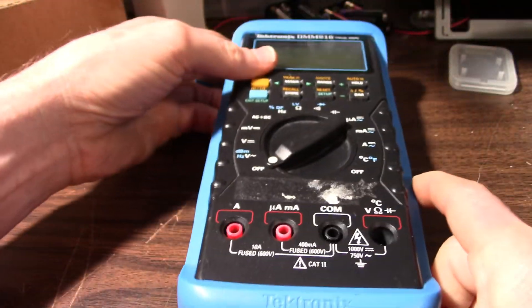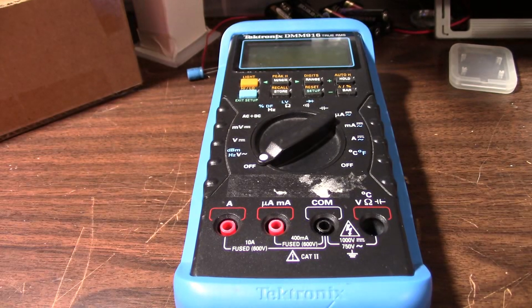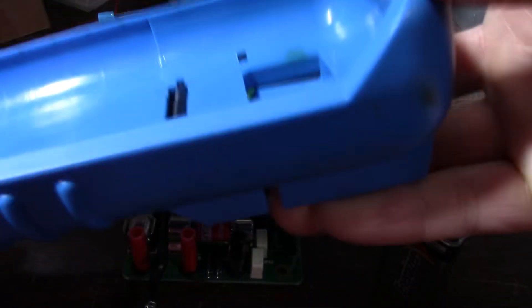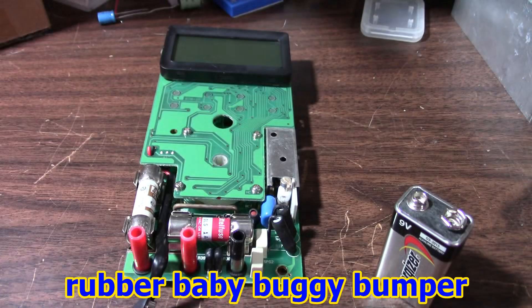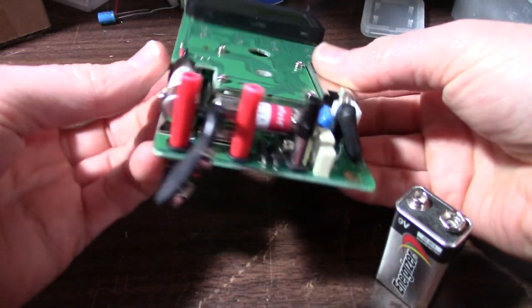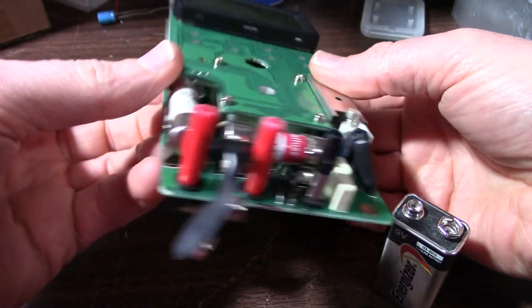Well at any rate let's pop this thing open and see what's on the inside. I removed the synthetic bumper cover. And here it is. Double layer type deal here. Double board.